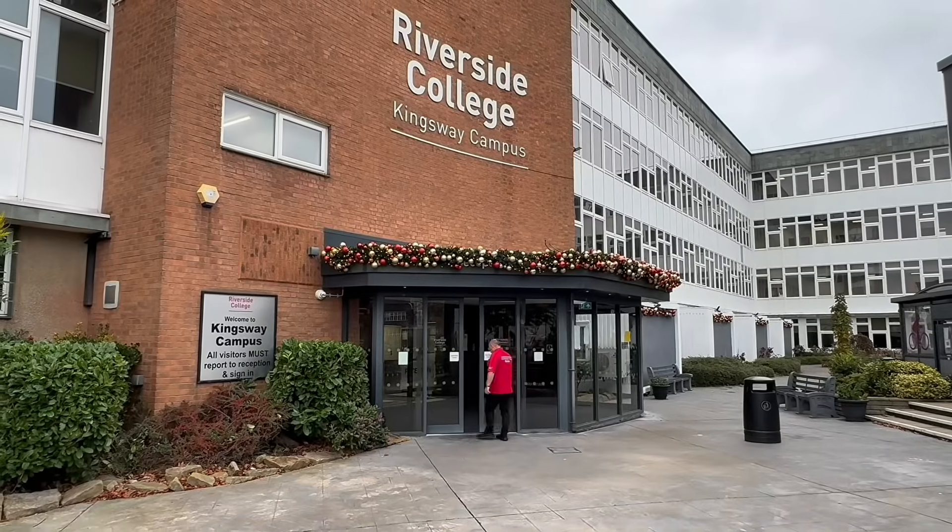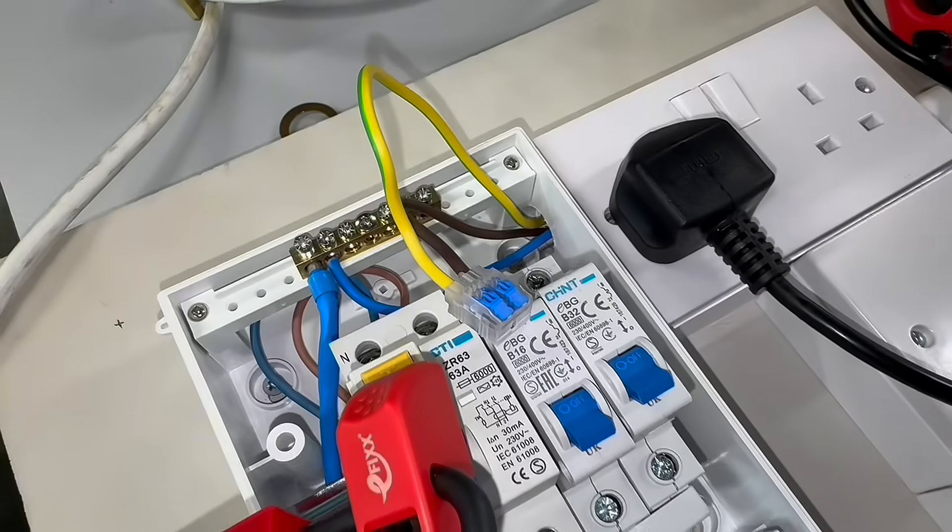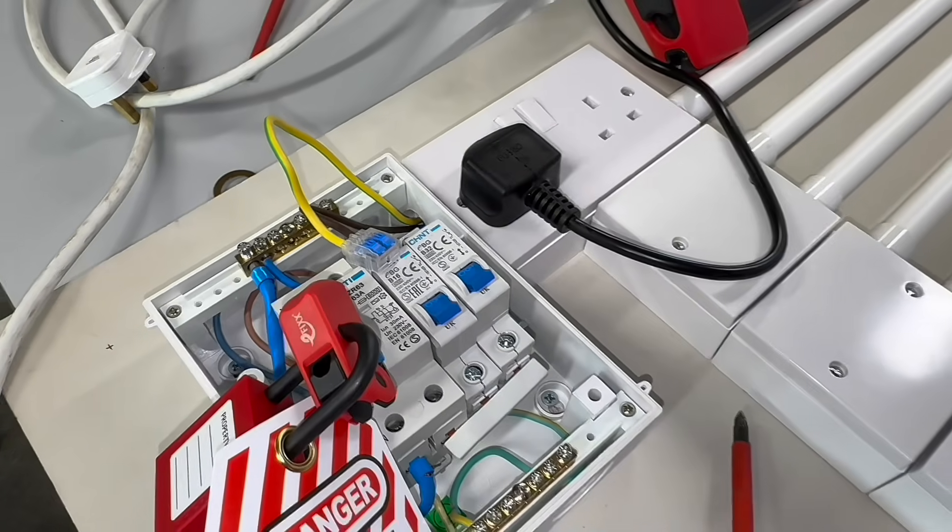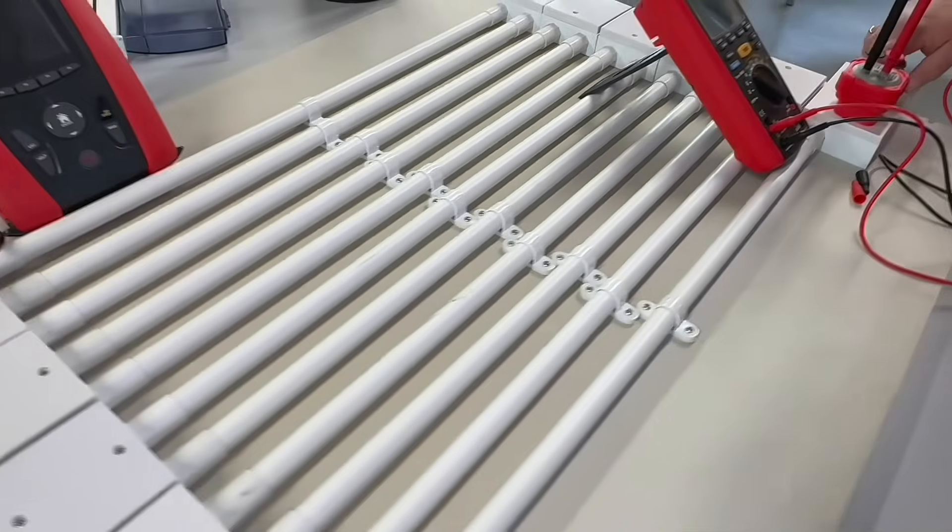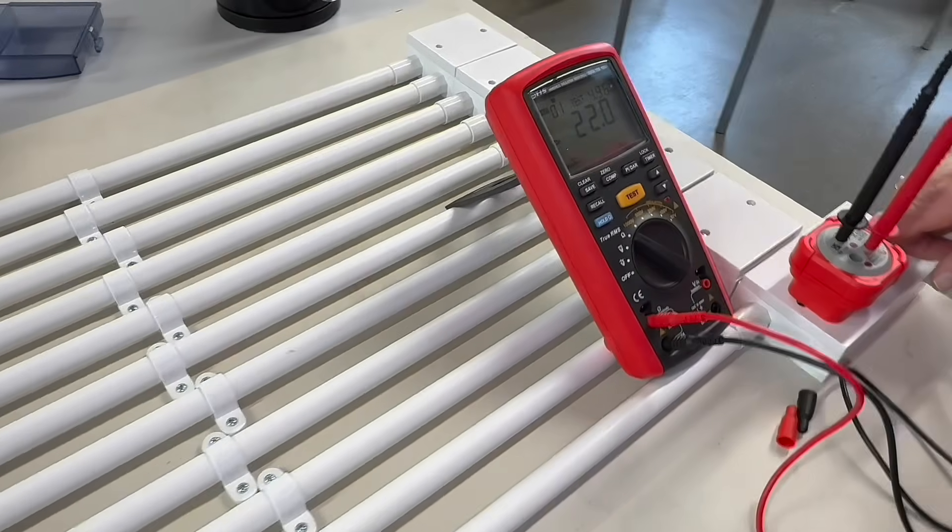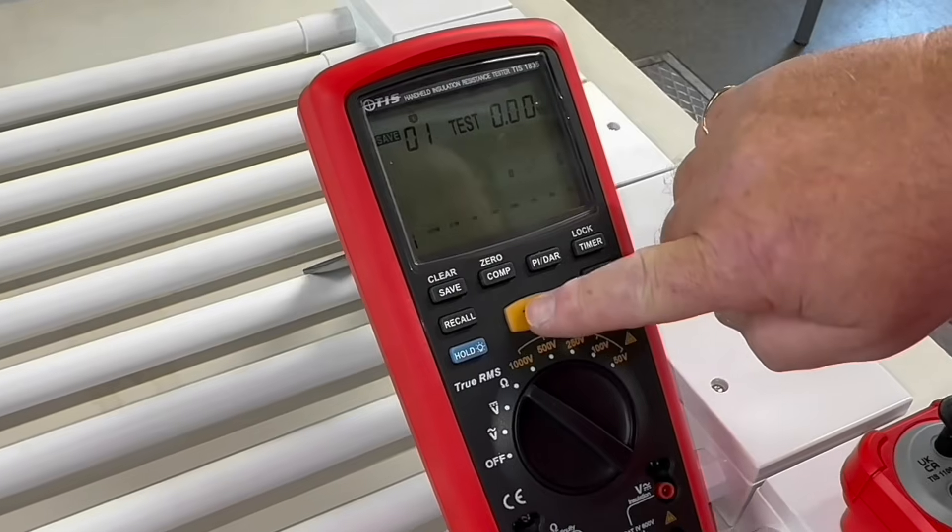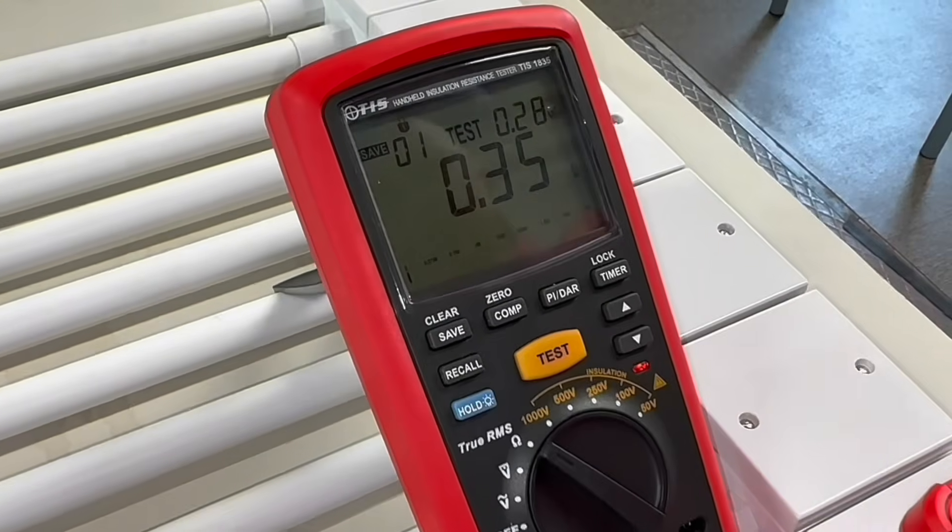So we've linked together line and CPC in the consumer unit of this radial circuit. Where are we going to measure the resistance from, Chris? I'm going to measure the resistance from this socket outlet, which is the furthest point on the actual circuit itself. Turn on and we get 0.35 ohms.